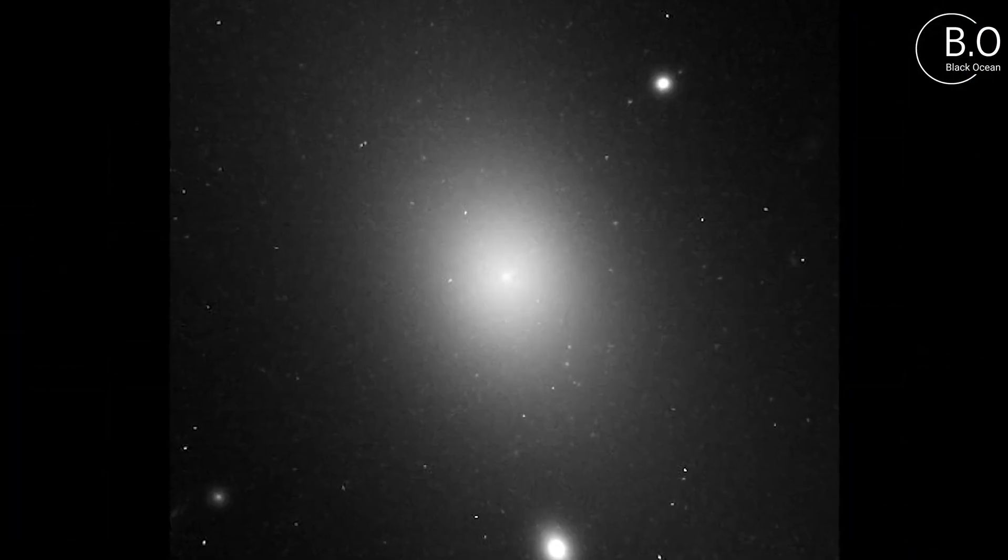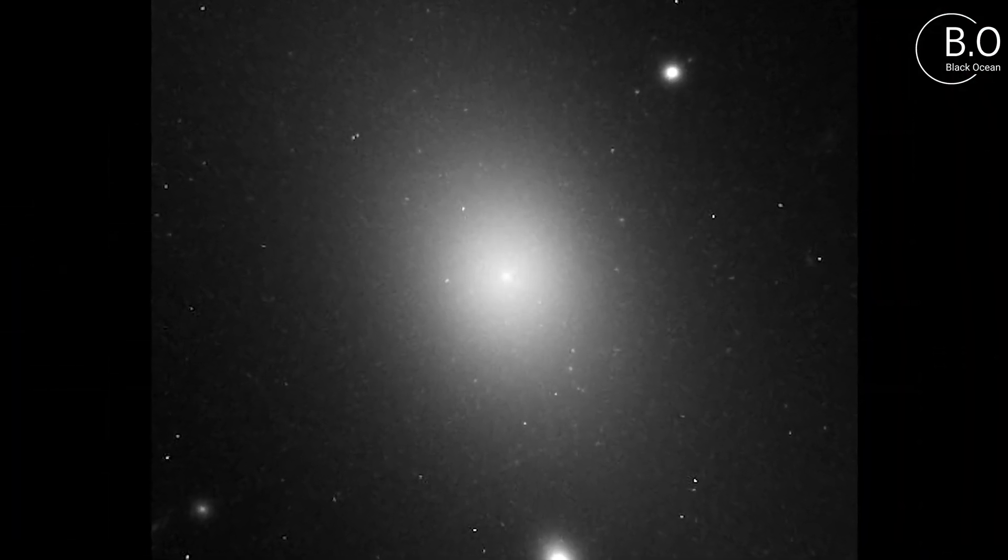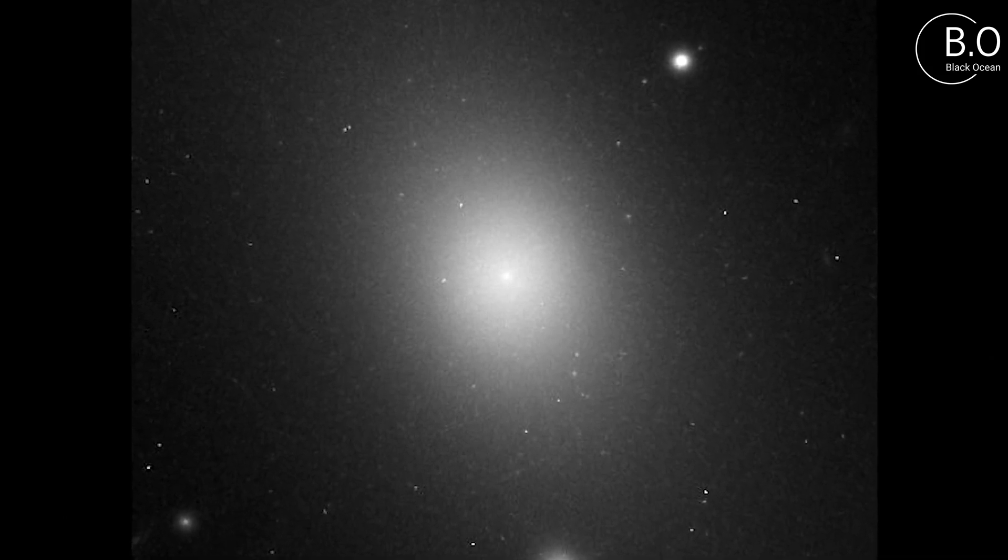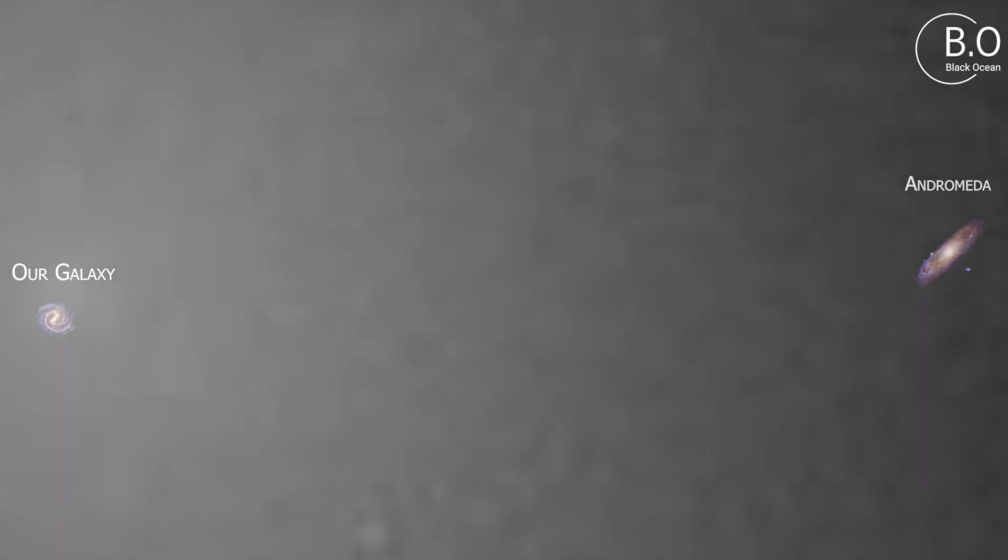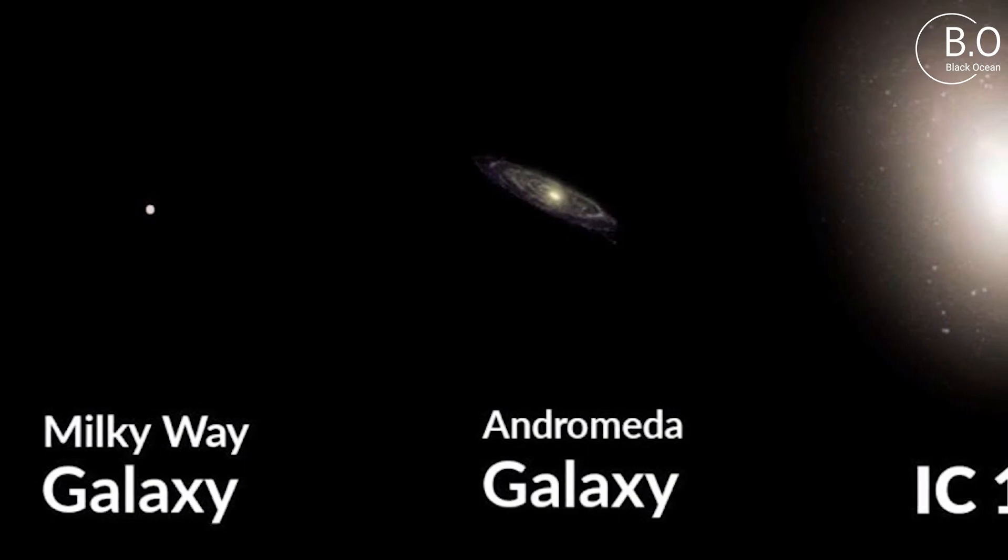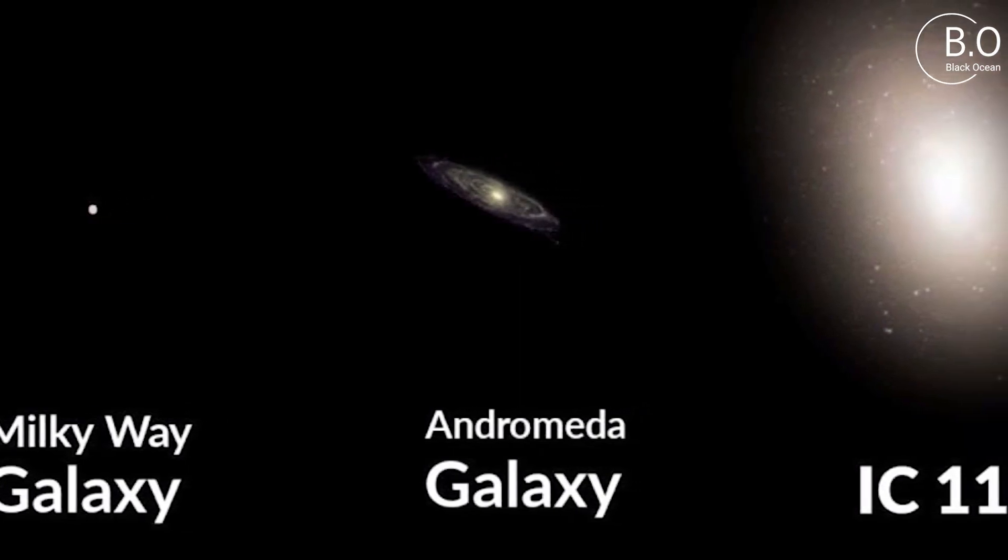Or at least the largest galaxy discovered by mankind. If we were to remove the Milky Way from the universe and replace it with IC 1101, then the edge of this galaxy could reach Andromeda. You probably know that Andromeda is the closest spiral galaxy to the Milky Way.